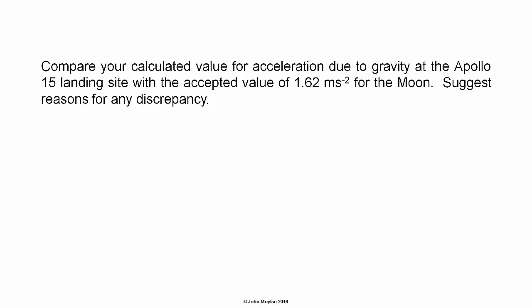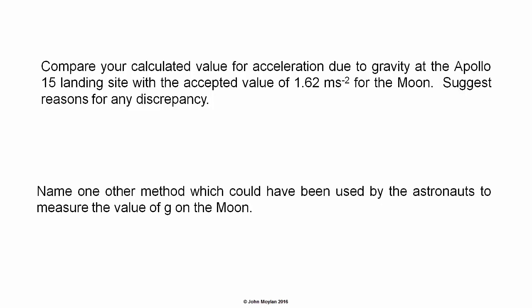Suggest reasons for any discrepancy — these will probably be fairly similar to the reasons for any discrepancy between your calculated acceleration due to gravity at your location in the previous exercise and the accepted value for acceleration due to gravity on the surface of the Earth. You're also asked to name one other method which could have been used by the astronauts to measure the value of acceleration due to gravity on the surface of the Moon.